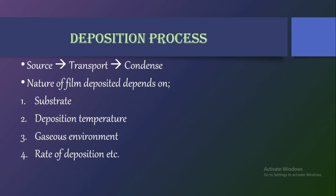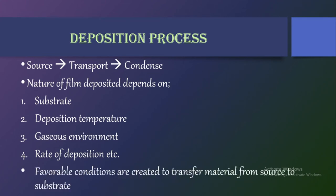If there is even a slight change in temperature, the thin film formed will be different. Based on the type of substrate — whether it is completely polished, smooth, or porous — the quality of the thin film is decided. Favorable conditions are created to transfer the material from the source, which is the target material. The substrate is the destination where the thin film is formed.